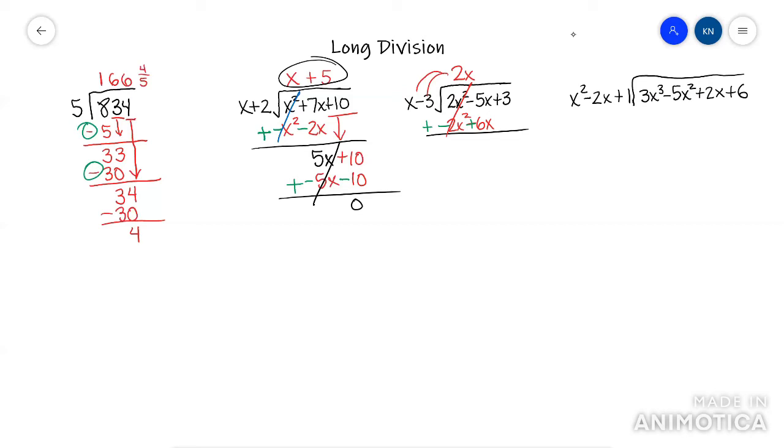And then it's minus 5X plus 6X is 1X. Drop your next term. And repeat. First term divided by first term, X divided by X is positive 1. Now I'm going to distribute that positive 1, that plus 1, to both of these things.